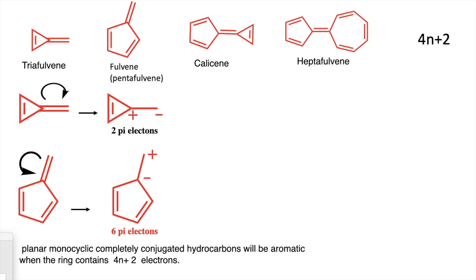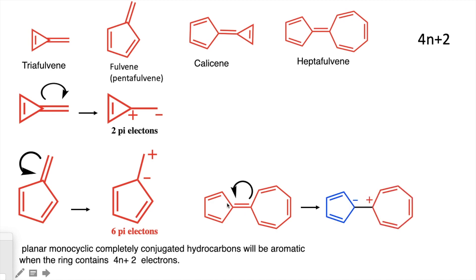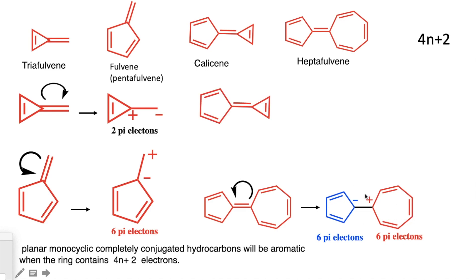Now if you look at heptafulvene, there is an exocyclic bond that shifts toward one side, creating a dipole through dipolar resonance. This forms one ring with six pi electrons and the other ring as a tropylium cation-type group, which also has six pi electrons. This is how the full molecule becomes aromatic.